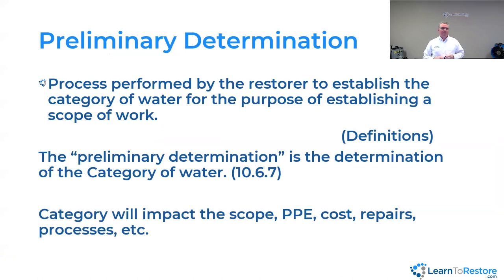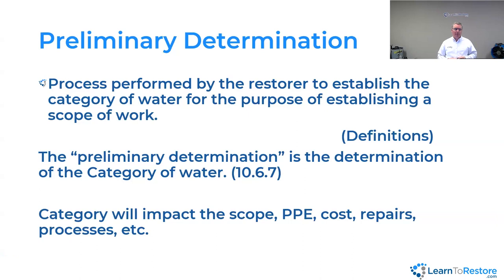There's a term in the S-500 called preliminary determination. Really, all it means is: what's the category? It's a process the restorer goes through to determine the category, then uses that to determine scope of work, personal protective equipment, and all the things that will happen based on the level of contamination. The preliminary determination has a huge impact on what do we do, what do we tear out, how much do we have to clean, what PPE — and whatever is torn out has to get put back together, which always increases cost.